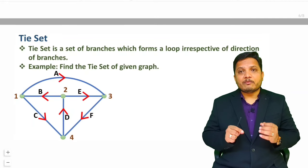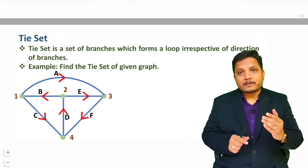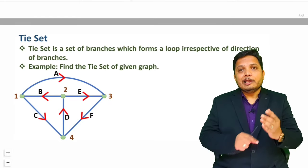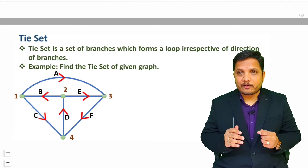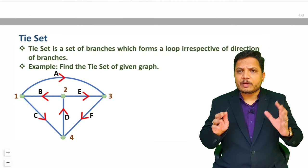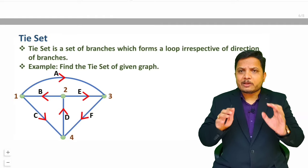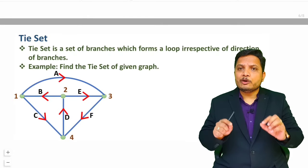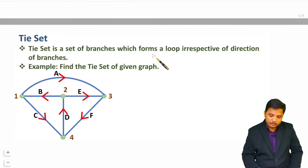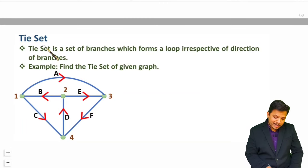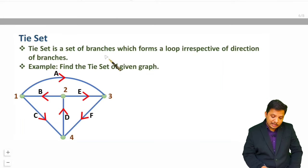Let us first understand what is tie set. Tie set is nothing but just a loop irrespective of direction. Whenever you have any graph, whatever loops are there — without having any knowledge of direction — you can consider those loops as tie set. So tie set is a set of branches which forms a loop irrespective of direction of branches.